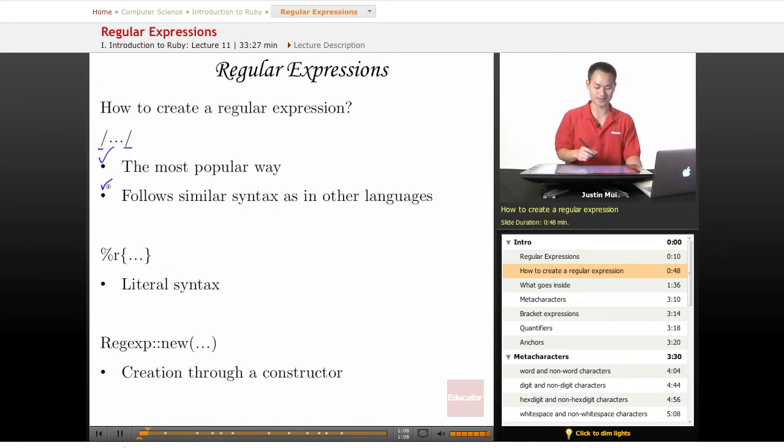Another way is the literal syntax. This one is more well-known in Ruby. It uses the percentage R, this curly brace is there. And you have it through the constructor with the regular expression new. And it creates it through the constructor.